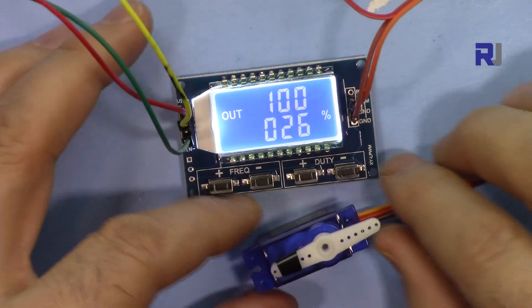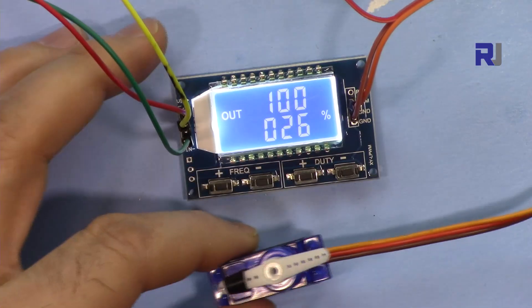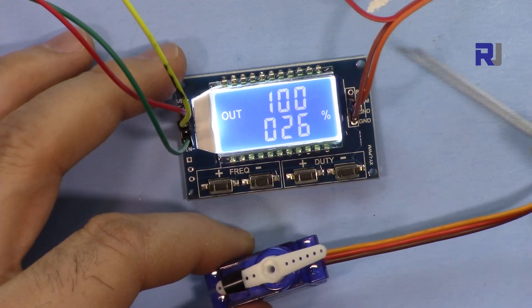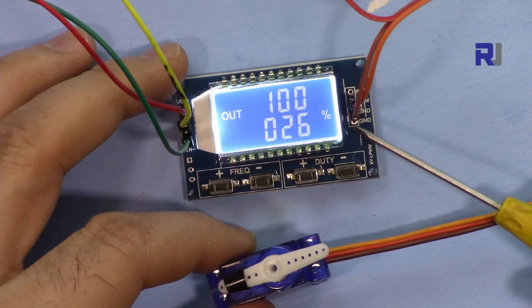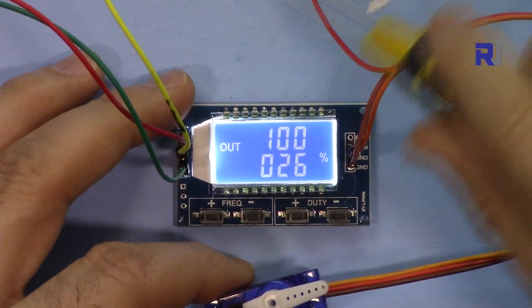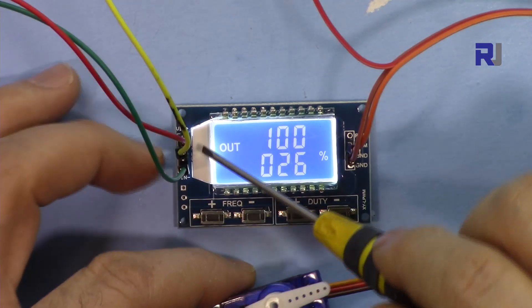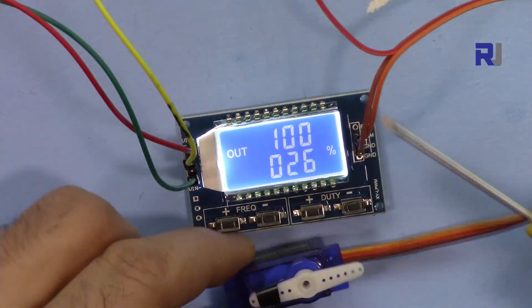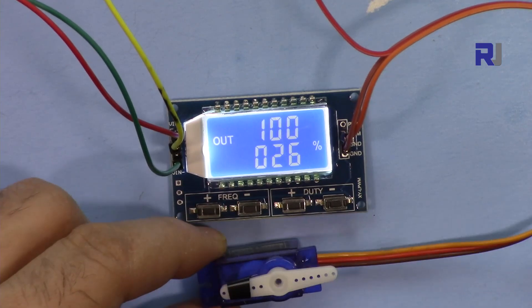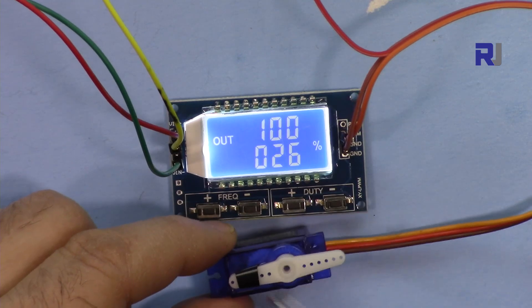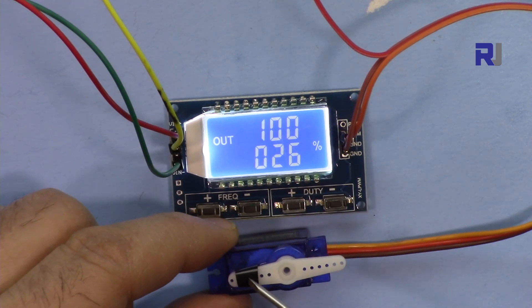Once you connect it, this is how the screen will appear. I've connected a servo here - the orange is the signal connected on the other side, the brown is the ground on this side, and the middle one which is red is connected to 5 volts. Now the frequency is 100 Hertz at 26% duty cycle.